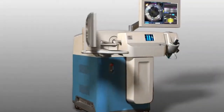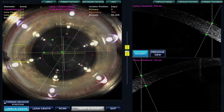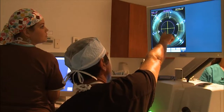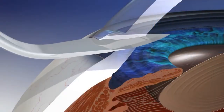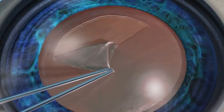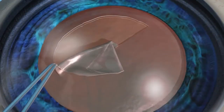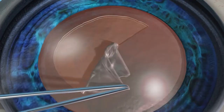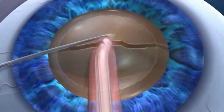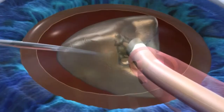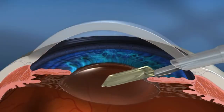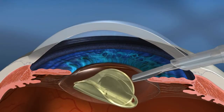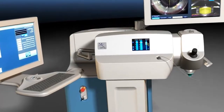Cataract patients now have two options: standard cataract surgery or laser refractive cataract surgery. Cataract surgery involves corneal incisions, capsular axis — a circular hole in the capsular bag — lens fragmentation, phaco emulsification, intraocular lens insertion, and incision closure. The LensX laser can assist with some of the most challenging steps.